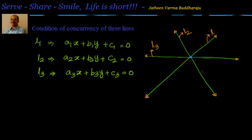Let's now try to find out the condition of concurrency and represent it in determinant form. For that, we will take l1 and l2 and find out their point of intersection — let us call it (x1, y1).